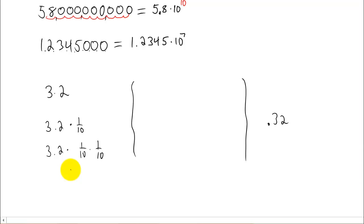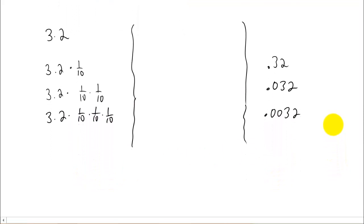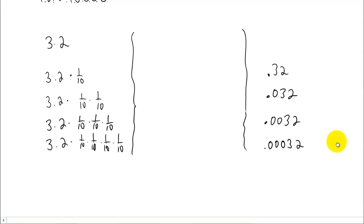What is 3.2 times 1 tenth times 1 tenth? Well, that's just going to move the decimal place twice to the left. And we can continue this pattern. 3.2 times 1 tenth three different times, this is just going to give us that number right there. And I'll do one more. And I think you see the pattern at this point.